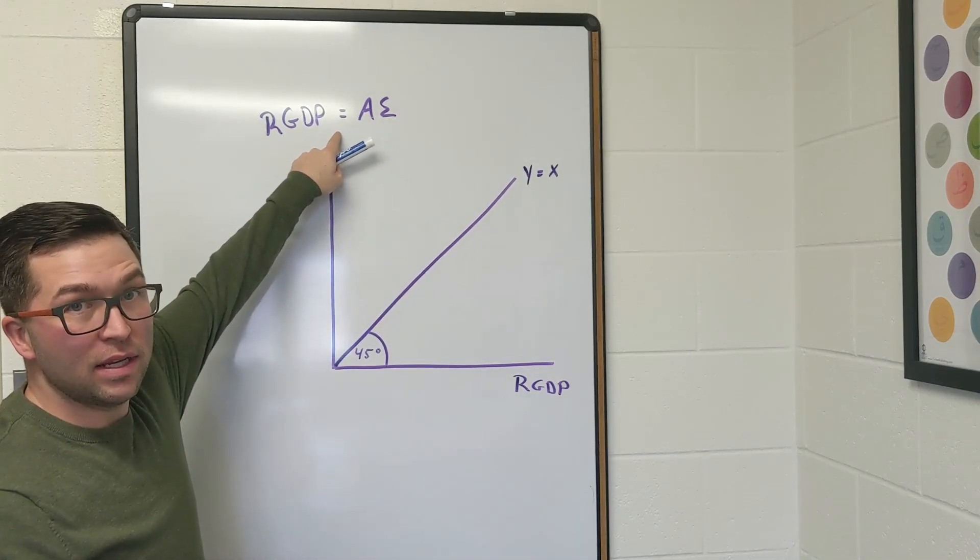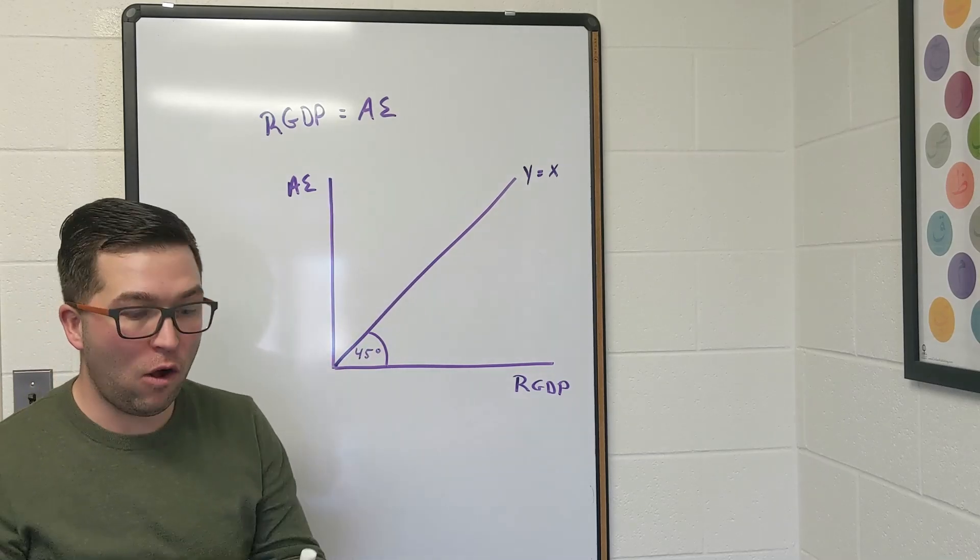So what happens if we put real GDP on the x-axis and aggregate expenditure on the y-axis? We know that they're equal in equilibrium, but that's just one single point. Real GDP does not always equal aggregate expenditure. We talked about that with the changes in inventories, but at a single point it always will.